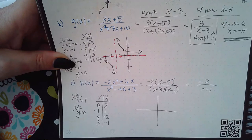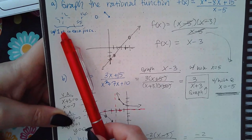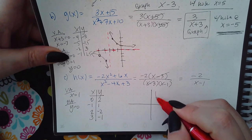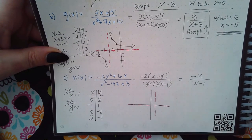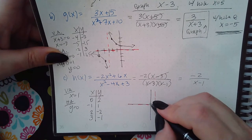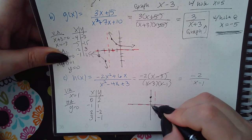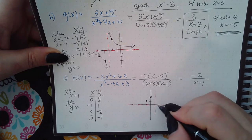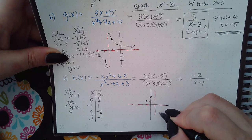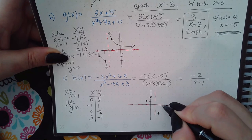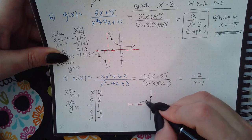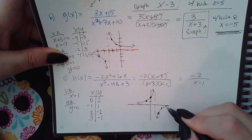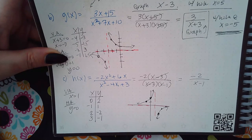The table gives me: 0 and 2, negative 1 and negative 1 on the left side, and 2 and negative 2, 3 and negative 1 on the right side. I click the vertical-and-horizontal icon, place the vertical asymptote at x equals 1 and the horizontal at y equals 0, then plot those four points.